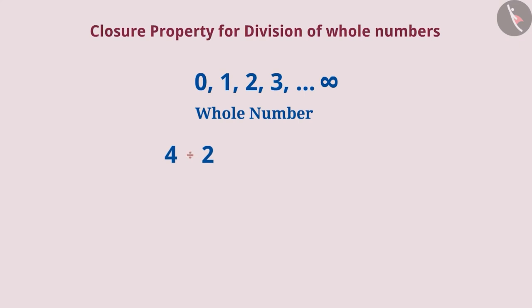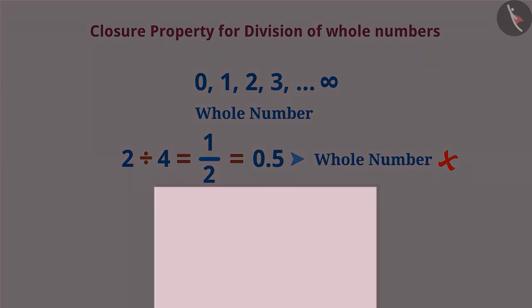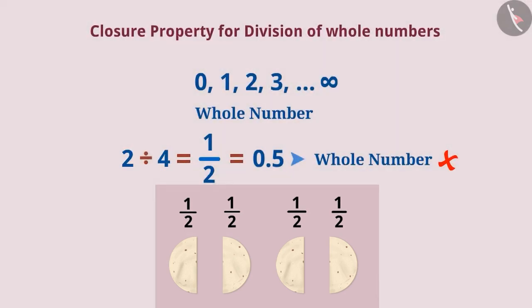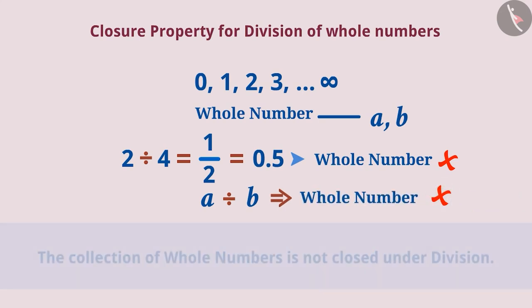Similarly, if we talk about division of two whole numbers, then we get a whole number only when the number is divisible. But sometimes the result of division is not a whole number. For instance, if we divide two chapatis into four parts, then each part will get half a chapati. That is, the result of 2 divided by 4 will be 0.5. The number 0.5 is not part of the collection of whole numbers, so it is not a whole number. Hence, the result of division of any two whole numbers is not always a whole number, so the collection of whole numbers is not closed under division.